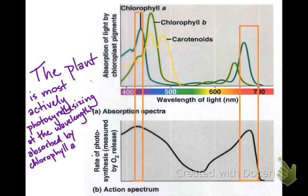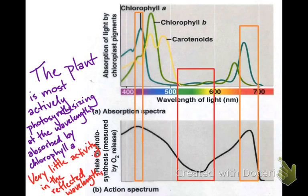You can also see that the plant is least active, least actively photosynthesizing, when it's only being hit with green wavelengths of light. Those reflected wavelengths are the wavelengths that the plant is not using or absorbing. We've got a lot of different wavelengths that the plant can function and photosynthesize at. There's a wide range of activity shown here in the action spectrum.